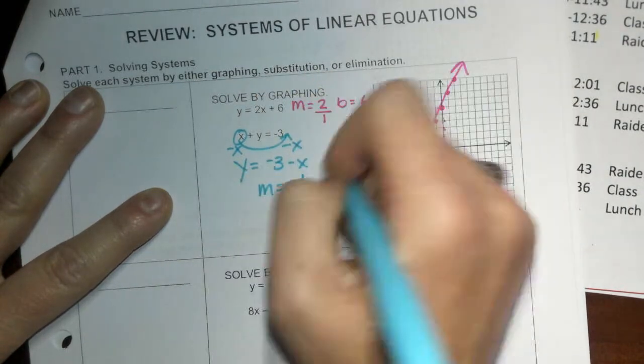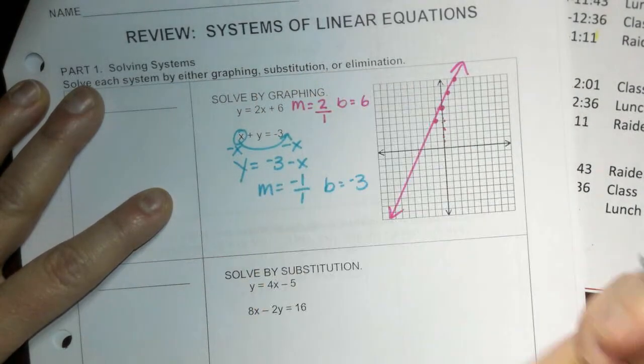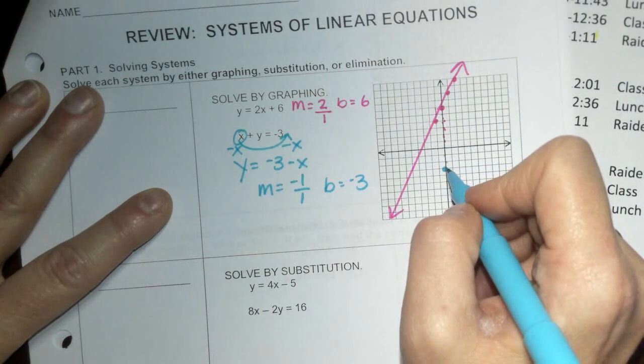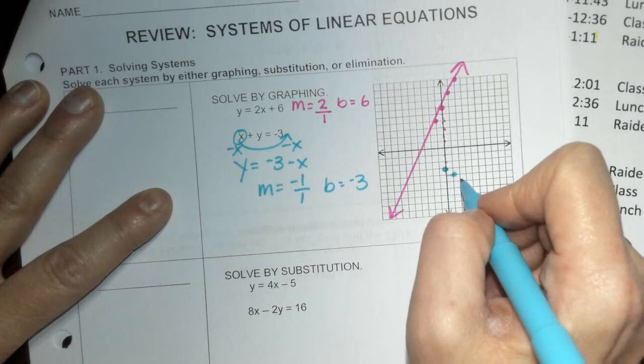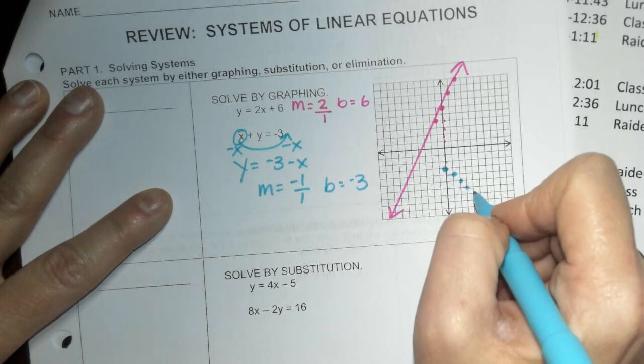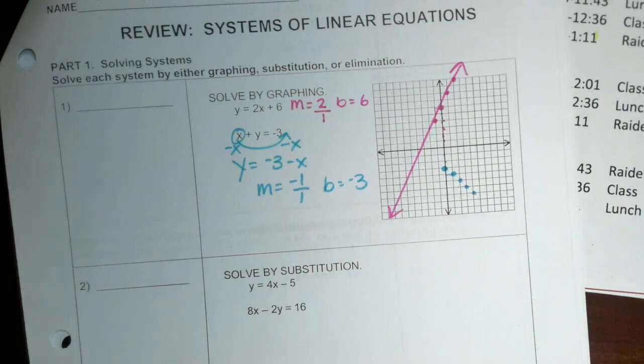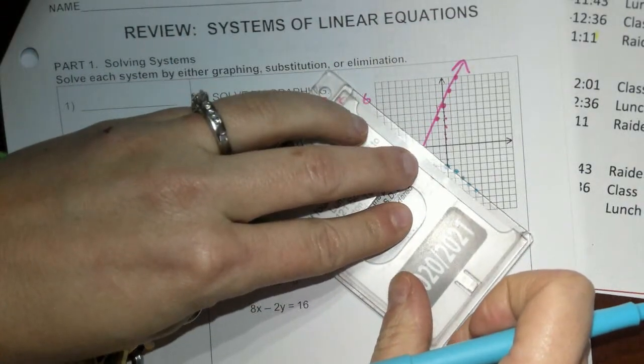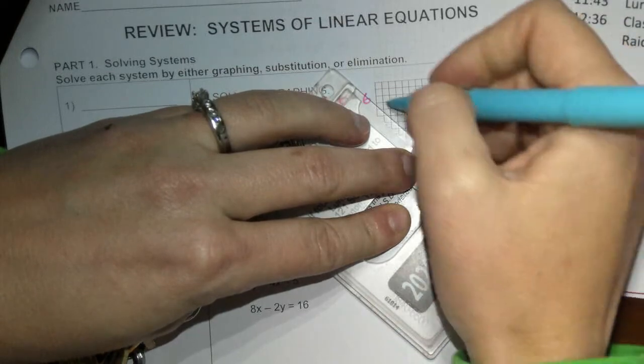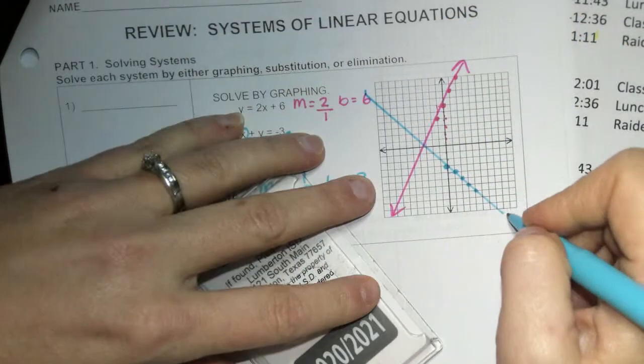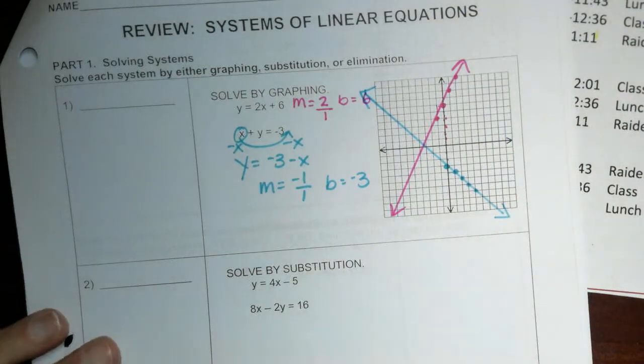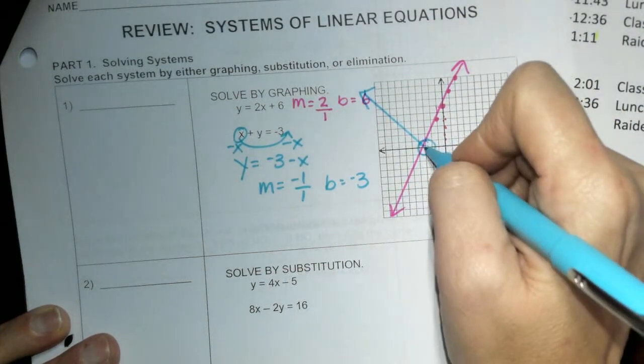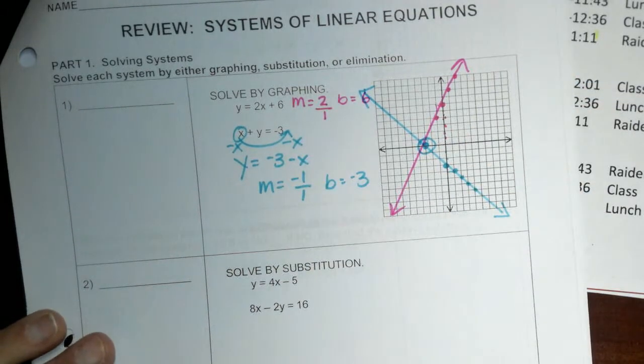This is actually the line I need to graph, so my slope is negative 1 over 1 and my b is negative 3, 1, 2, 3, and then negative 1 over 1. We're going to go down 1 over 1 just like this. All right, so we can see if I were to draw my line straight, they would have crossed here at this point.